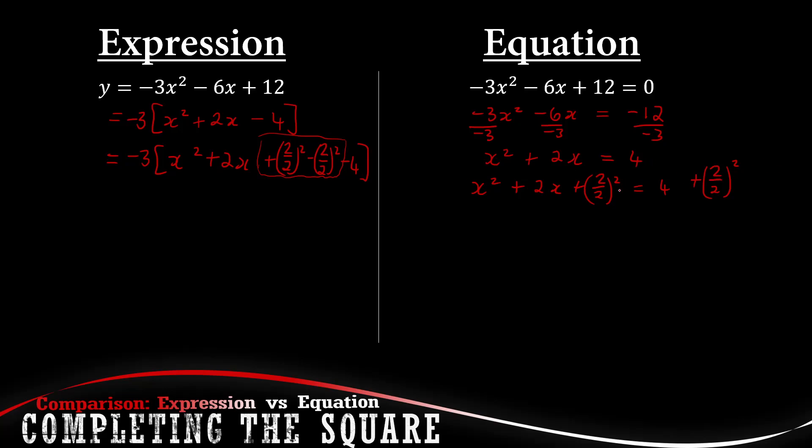Then further on we are going to group. So we've got x plus 1 squared, and then this is 1 squared so that becomes negative 5. And then we just multiply back the negative 3, so that's negative 3 times x plus 1 squared plus 15.